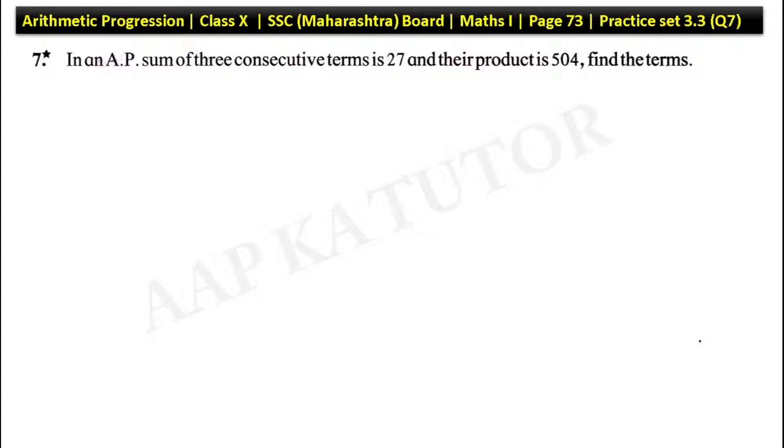In an AP, sum of 3 consecutive terms is 27 and their product is 504. What do you need to do in this case? In this case, you have to do an assumption. First, you have to write the solution. Let the consecutive terms be a minus d, a, and a plus d.